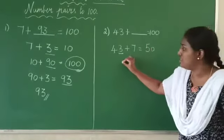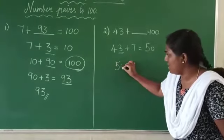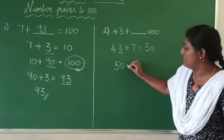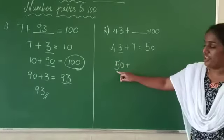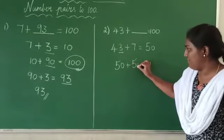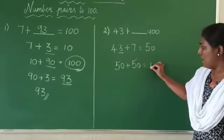Now you have to take this answer. 50 plus what you have to add here? Who is the friend of 50? 50 plus 50 gives you 100.